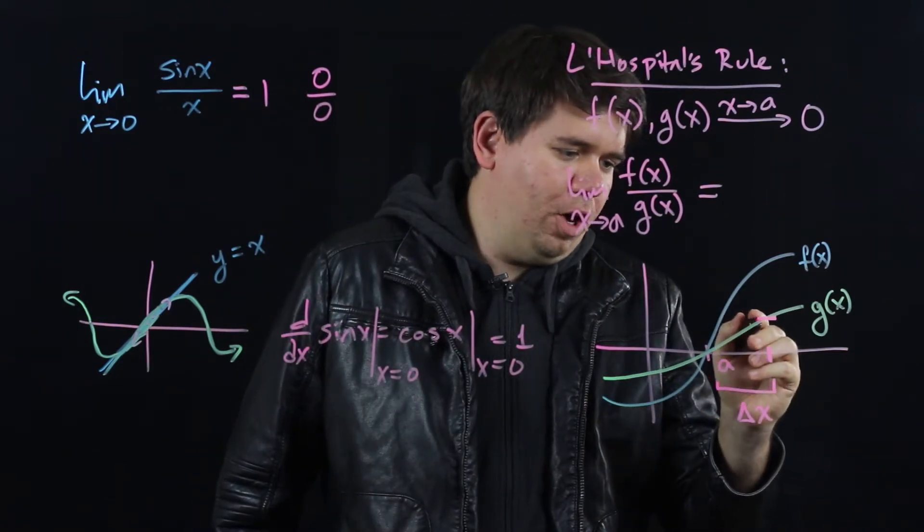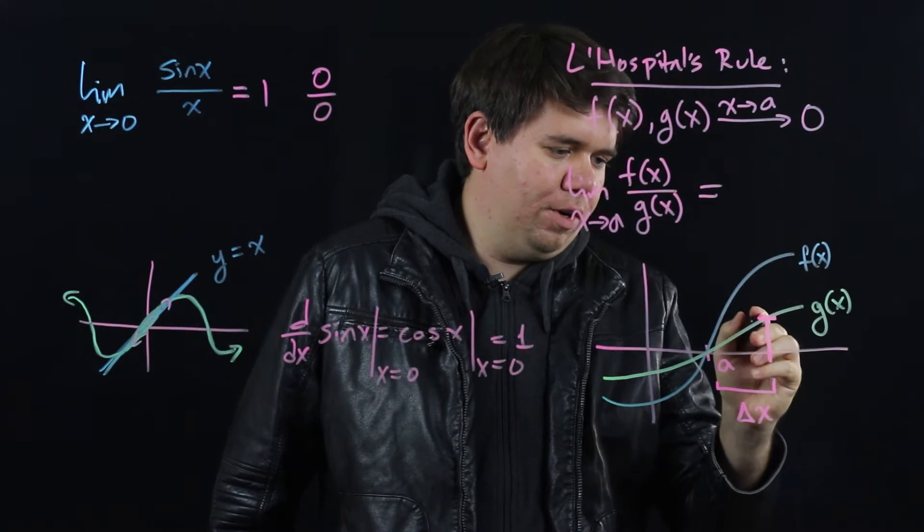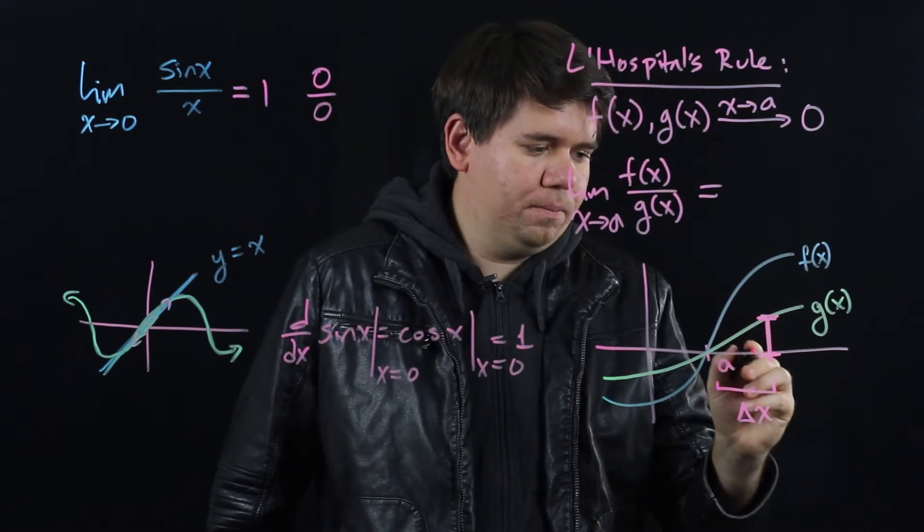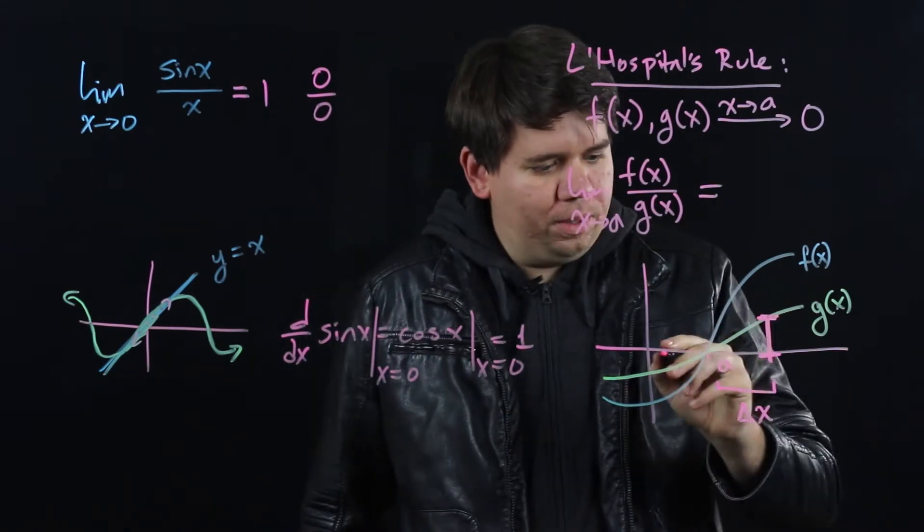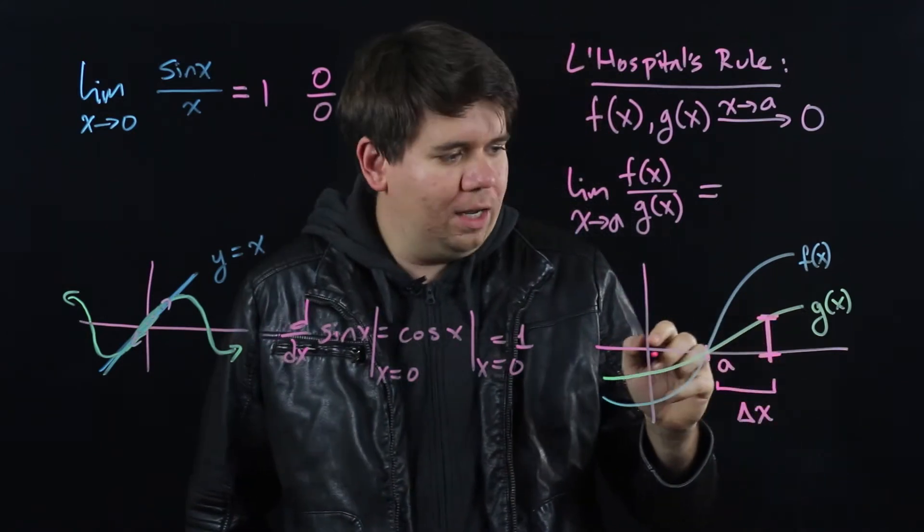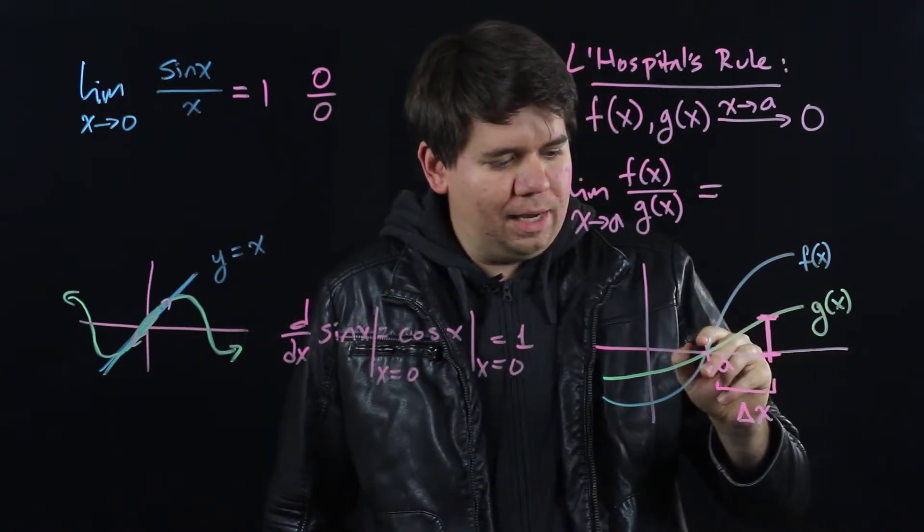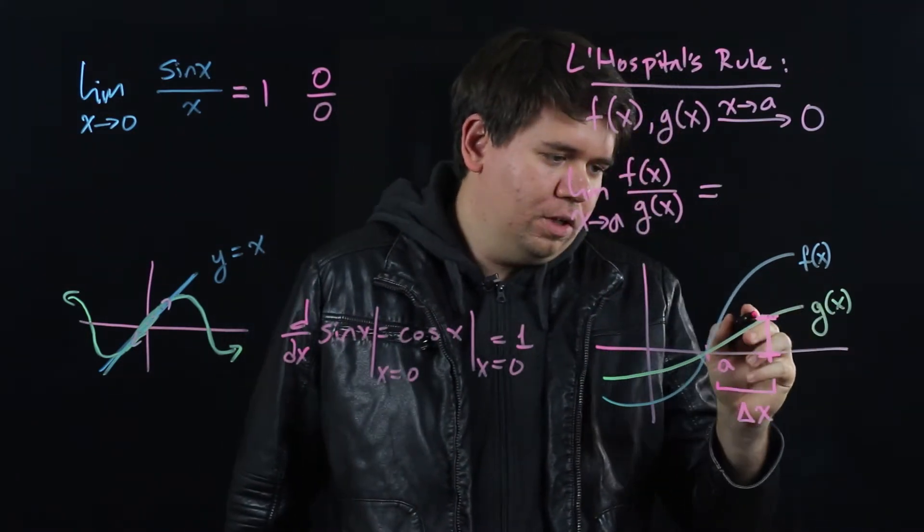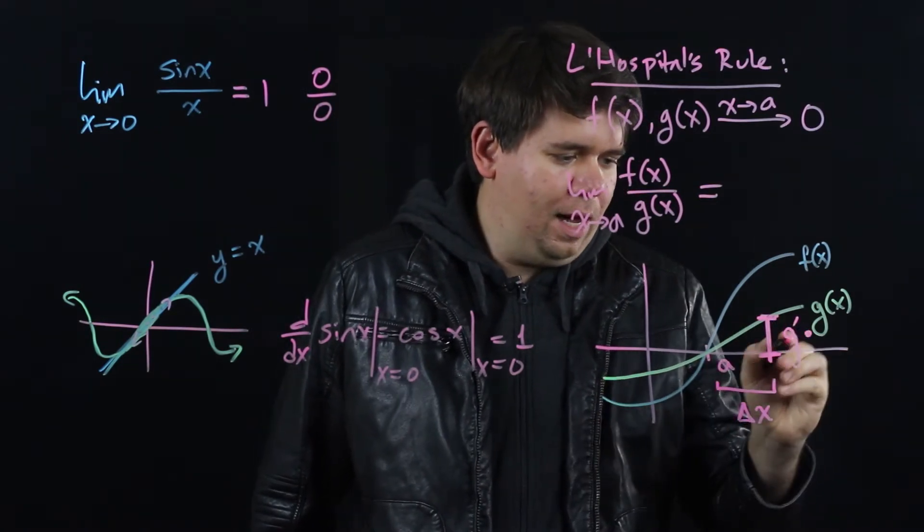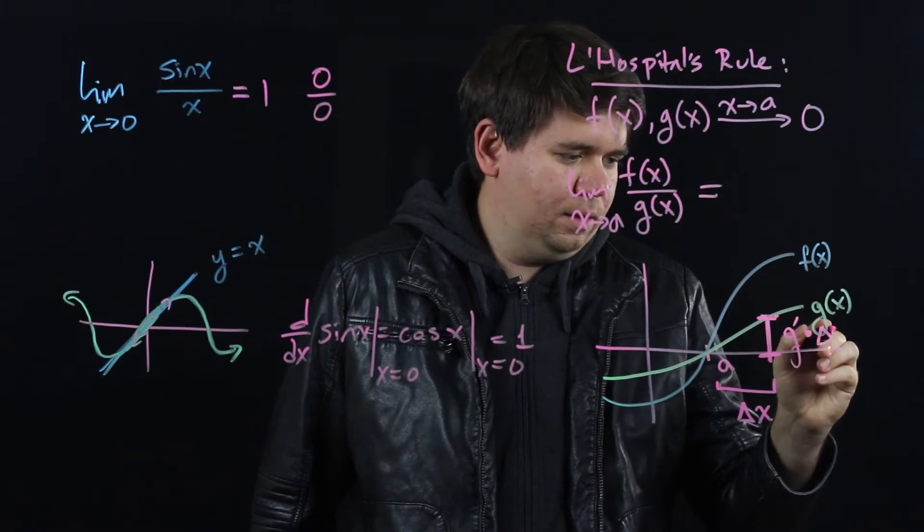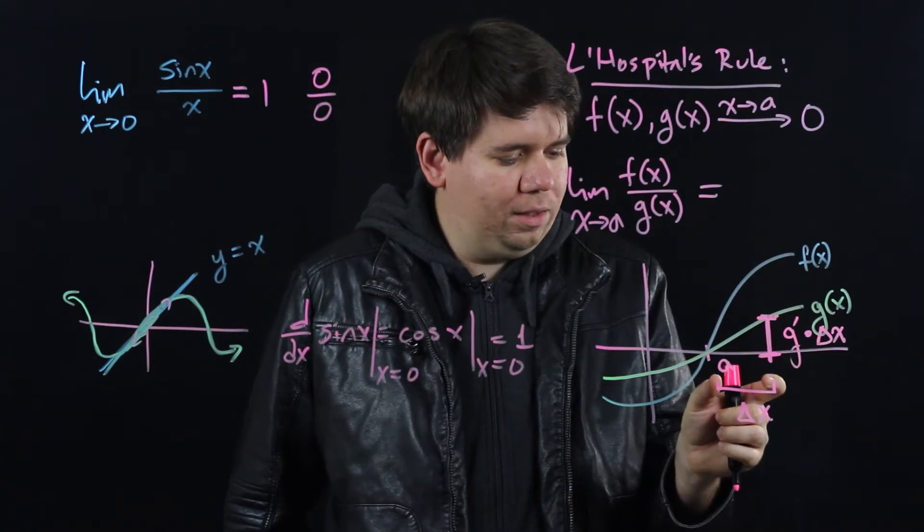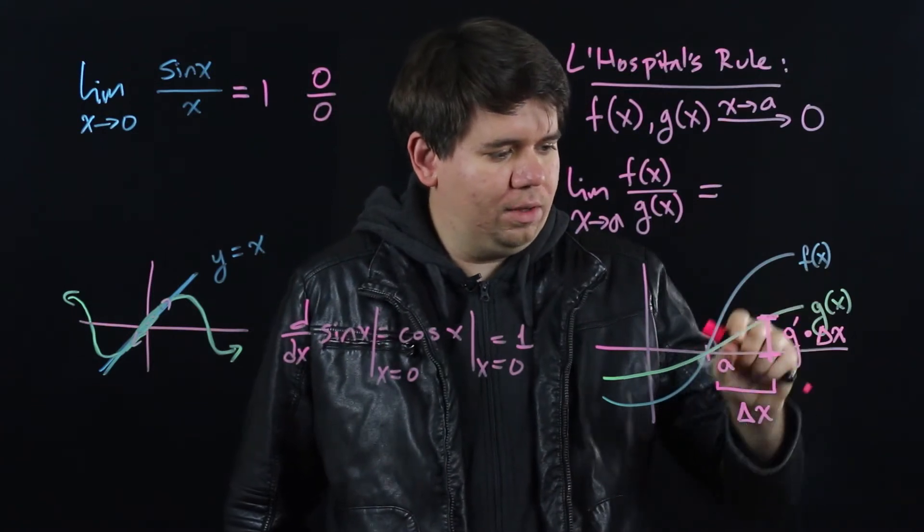Then we can ask, how quickly are both of these approaching the a? In particular, how far off is this from 0? How high is g of x when you're delta x over? Well, we know the slope of the line here. The slope of g of x is given by its derivative, g prime, figuring out its derivative as x goes to a. So this height should just be your slope, whatever g prime is, times that delta x, because that is the width. Your width times your slope gives you the height.